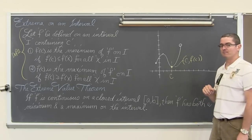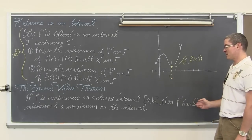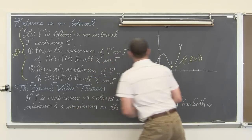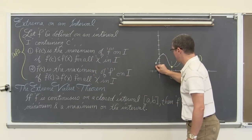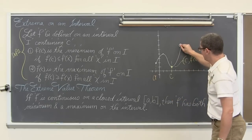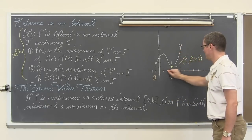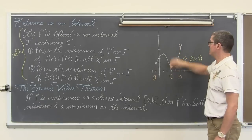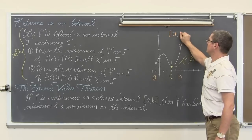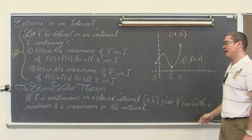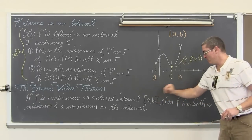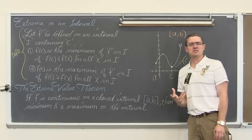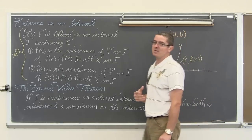Now the extreme value theorem. If f is continuous on a closed interval — now this is not a closed interval. Here we have a at one end and at an x value of 1, 2, 3, 4, 5 we have b. So this graph is defined from a to b, closed on the left and open on the right. If f is continuous on a closed interval, then f has both a minimum and a maximum value — it is guaranteed. You don't get that guarantee when it is an open interval.